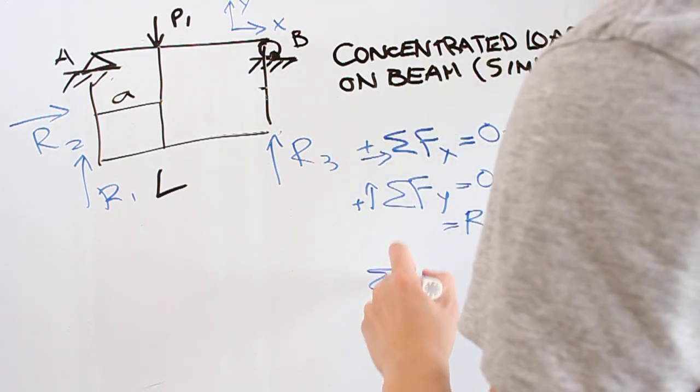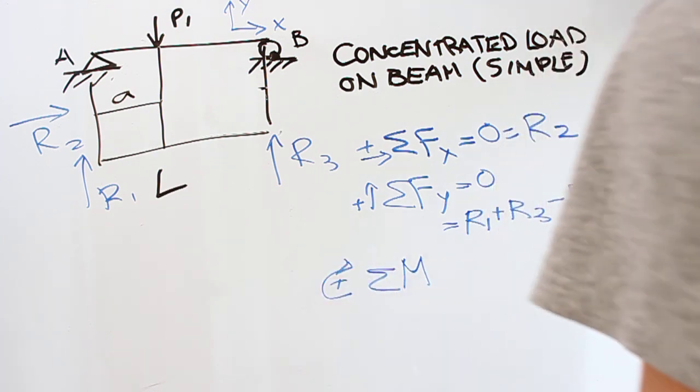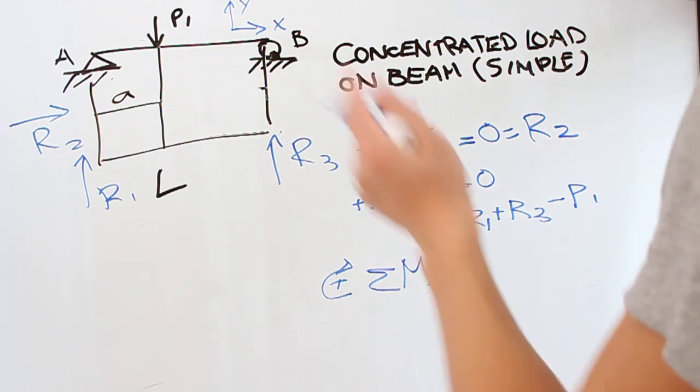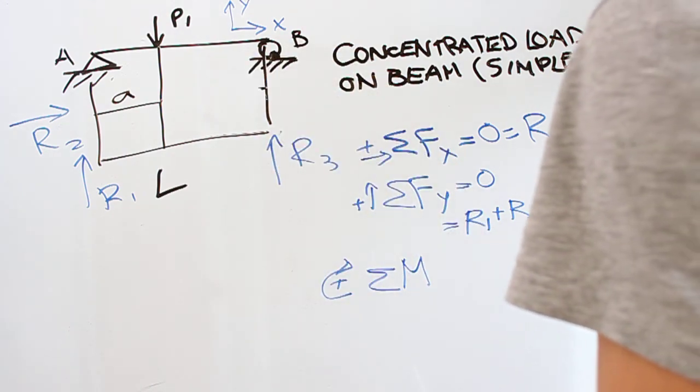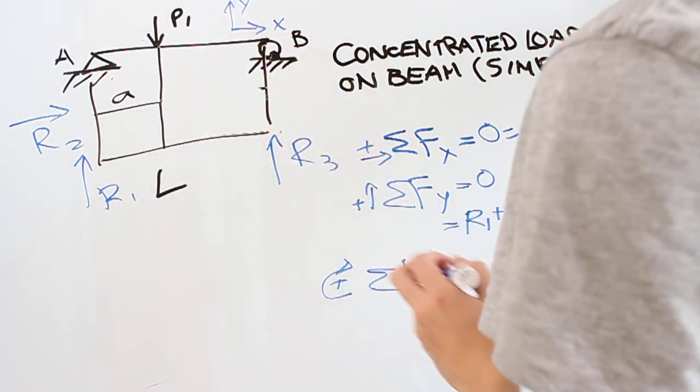Finally, we're going to look at moment. Let's say that clockwise is our positive direction. Now, for moment, you can choose around any point, and really it doesn't matter. It's pretty much going to give you the same amount of work. Let's just arbitrarily pick B.